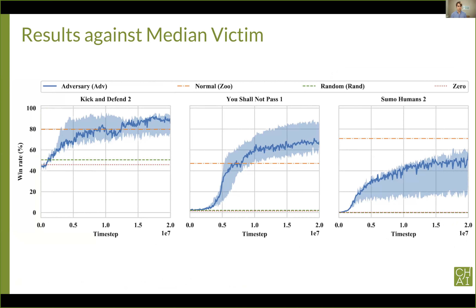We train our adversary for only 20 million time steps — less than 3% of the time steps used to train the policies we attack. Despite this, our adversary (the blue line) outperforms the normal zoo opponent (the yellow horizontal line) against the zoo victim policy in both kick and defend and You Shall Not Pass, and does pretty well on sumo as well. The shaded blue region shows the minimum and maximum across five random seeds. In You Shall Not Pass, even the worst seed outperforms the baseline.